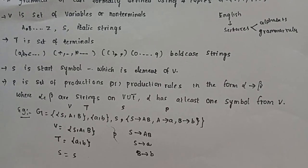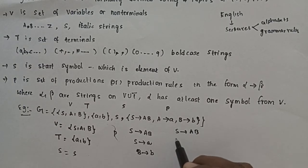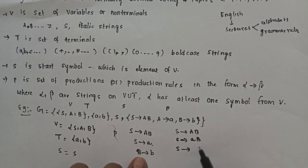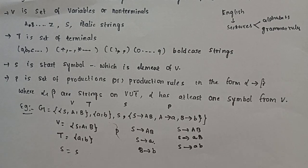We can generate strings using these production rules. We substitute terminals in place of non-terminals. For example, S tends to AB; substituting A with a and B with b gives us the string 'ab'. This is about grammar in the Theory of Computation.